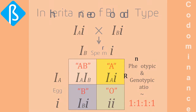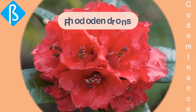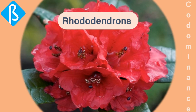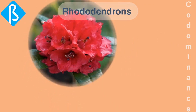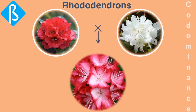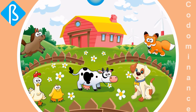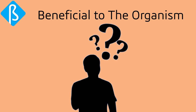Rhododendron plants also show co-dominance: when red and white flower plants are crossed, the progeny has flowers with white and red patches. This phenomenon is also common in animals like dogs, horses, and cattle, which show different color patches on their skin.